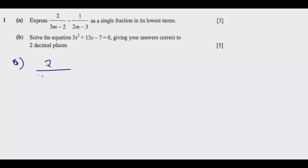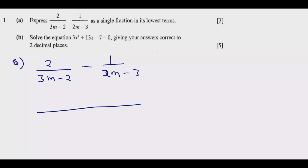The first thing is they are testing your ability to work with negative numbers — that's the purpose of this question. And also your ability to identify the common denominators. You notice that you have 3m minus 2 as the denominator of the first fraction, and 2m minus 3 as the denominator of the second. There's nothing that can go into both of these at the same time other than 1, so the next step is to multiply these two together as the common denominator.